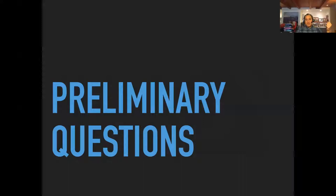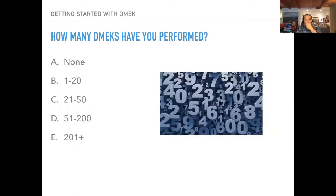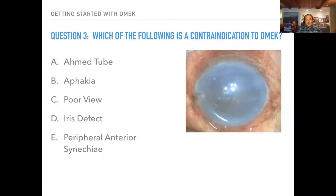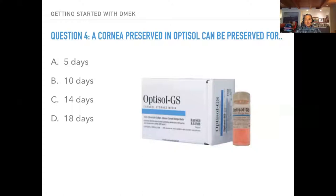Here are some preliminary questions to get an idea of the audience. How many DMEKs have you performed? Okay, so most people haven't performed any — pretty much a novice DSAEK/DMEK audience. Do you have easy access to prepared/stamped DMEK tissue? Most places outside the US, Canada, and Europe wouldn't have access to prepared stamped tissue. Which of the following is a contraindication to DMEK? We'll go into this — some are relative contraindications that can be overcome with experience, but aphakia would be the strongest.